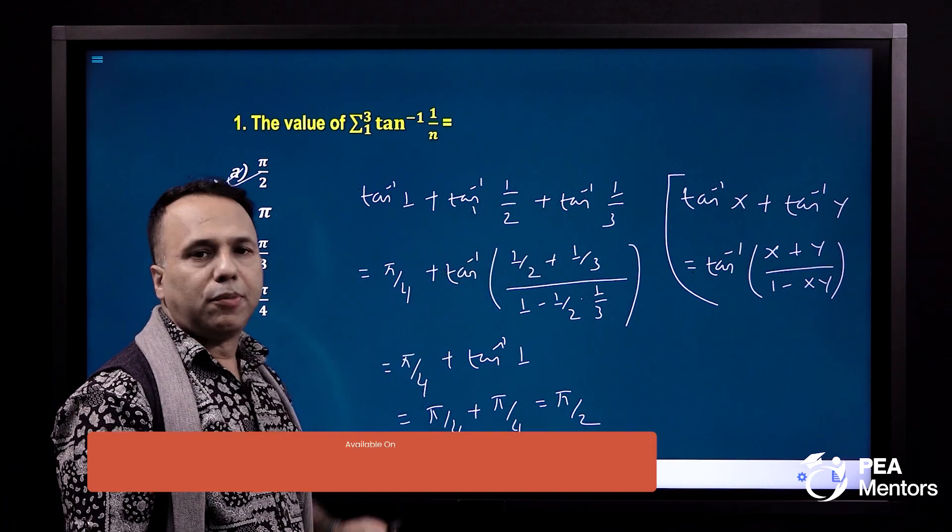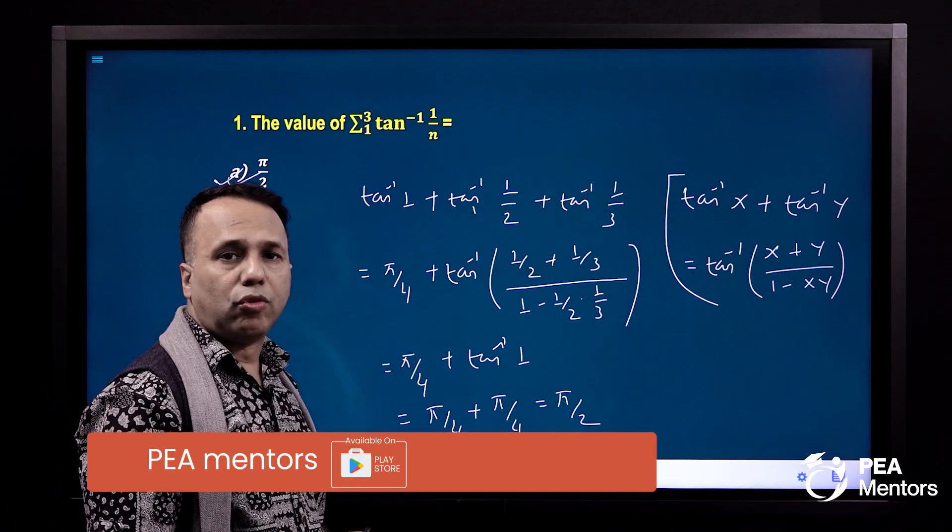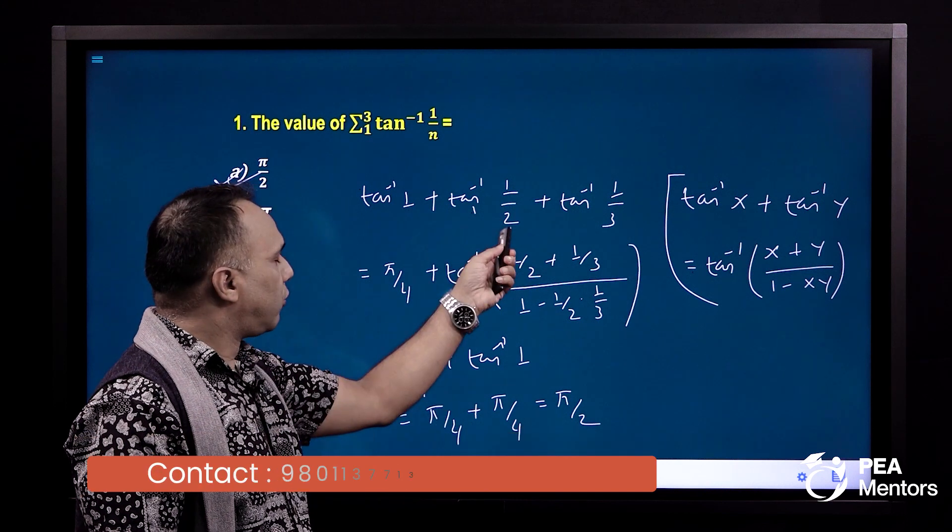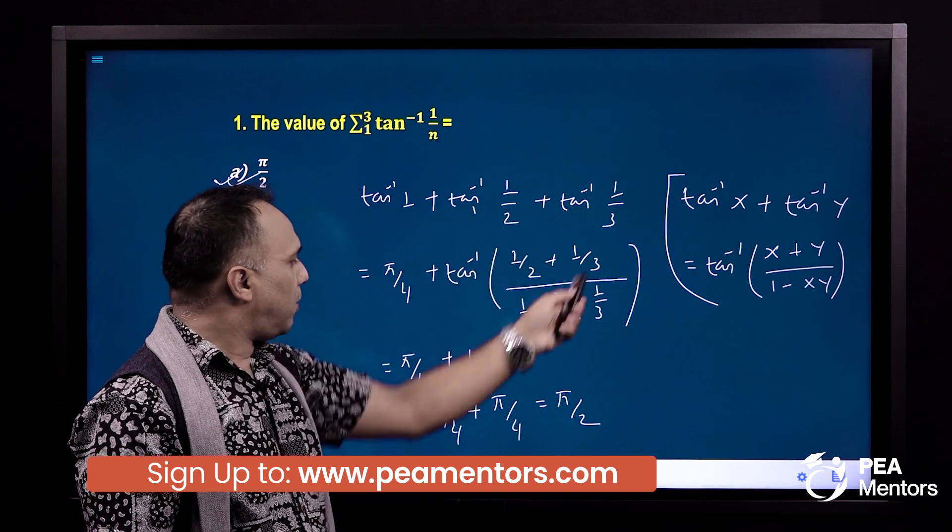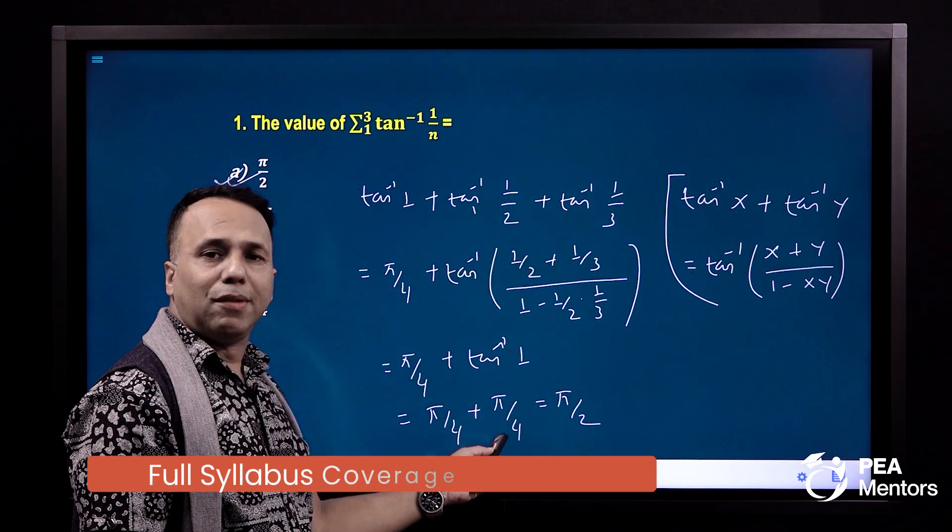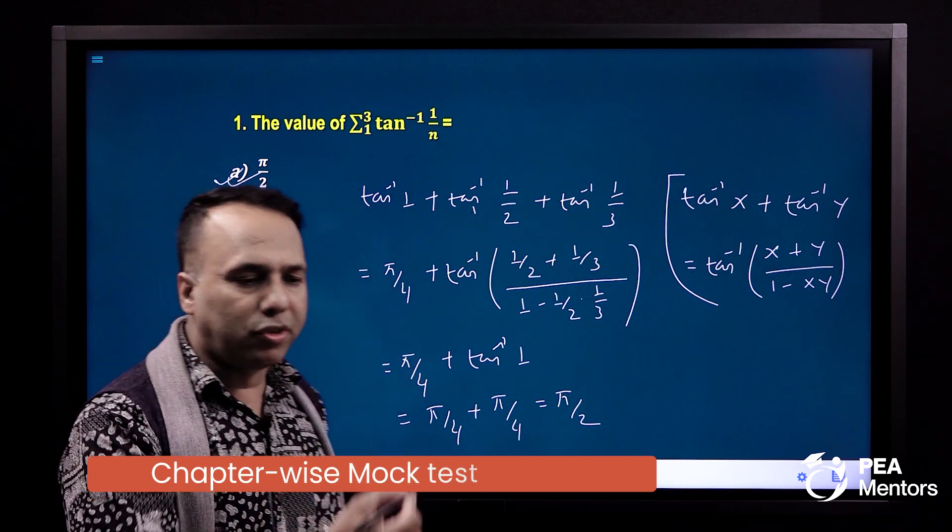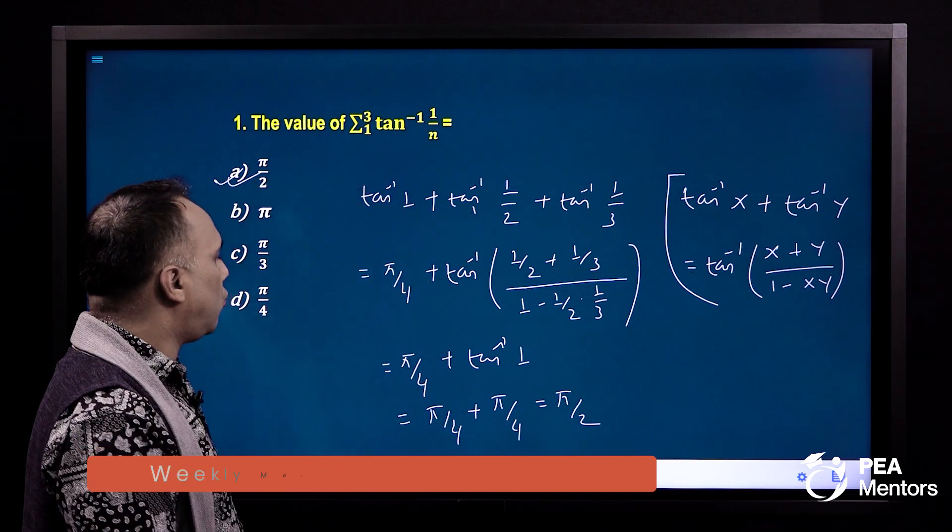We have seen this part. tan inverse 1 by 2, tan inverse 1 by 3. We have to remember the result. 1 by 2, 1 by 3. Pi by 4. We have to remember that. We have to do the problem with the previous problem.